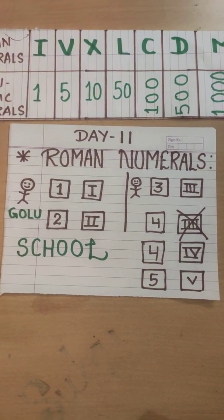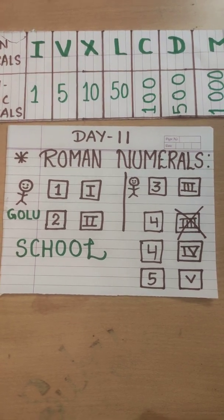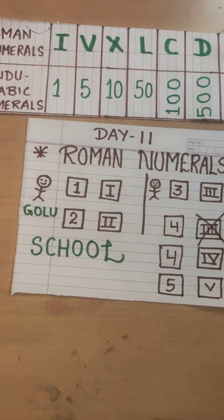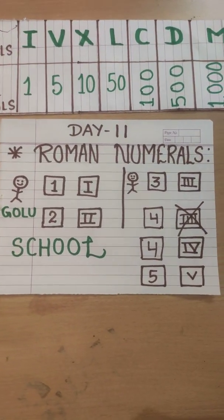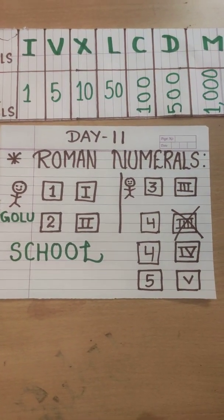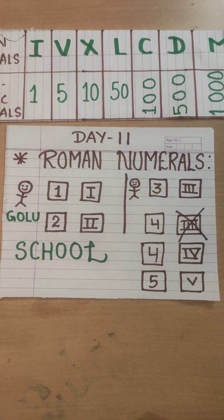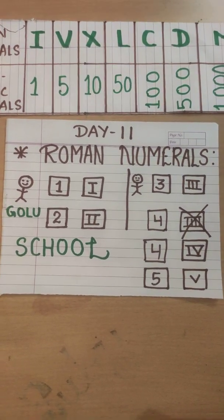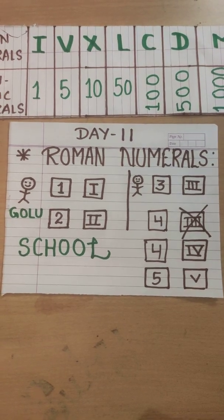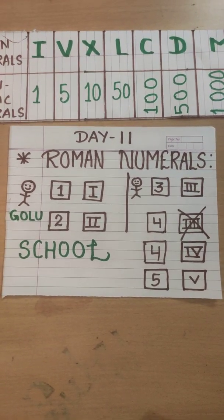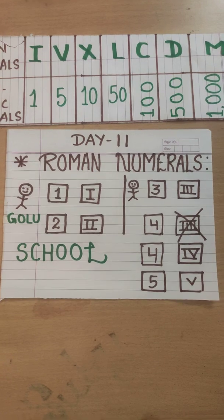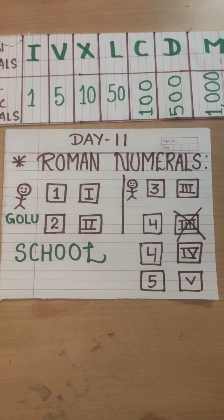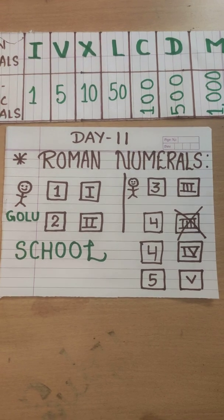When he entered to class 3, he saw 3 times I was there. Then he thought okay in class 4 also it will be the same, 4 times I will be there only. When he entered class 4, he saw that it was not the same. There were different letters written on the top of the classroom. It was written as IV and 5 was written as V. Then he was confused.